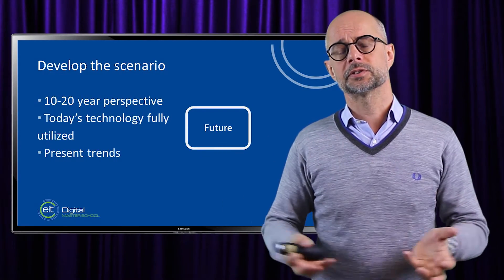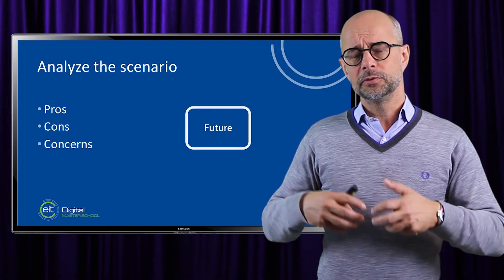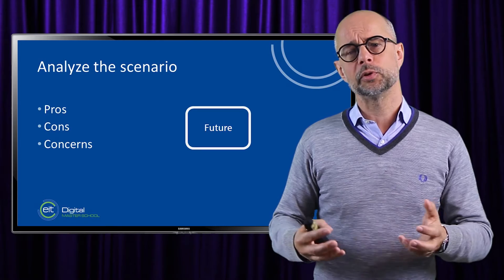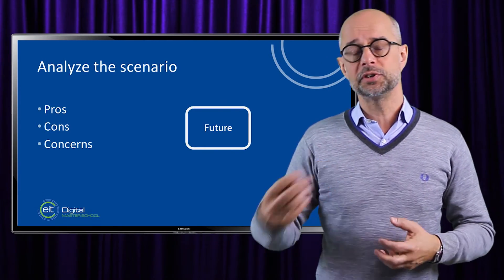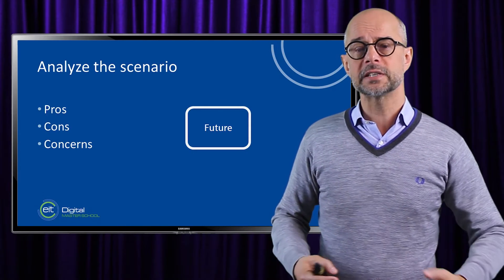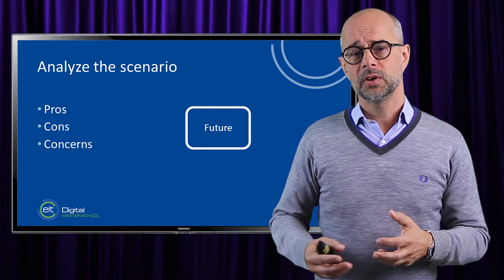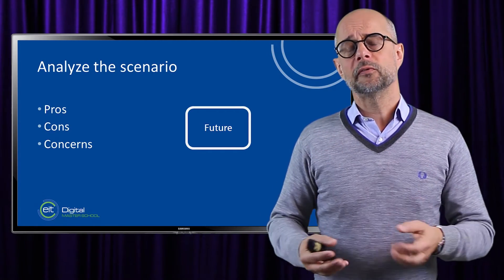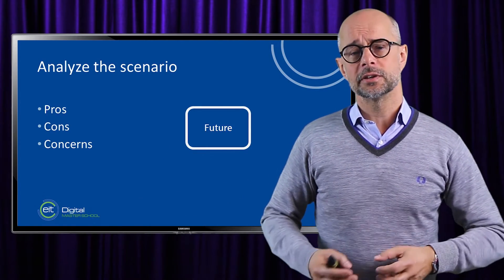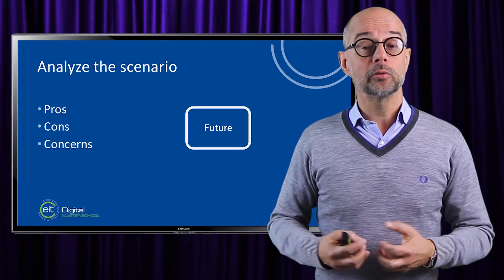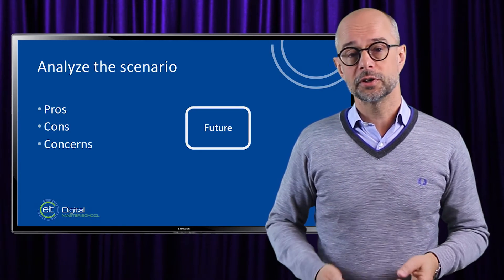Once we have this first draft of a scenario, we need to analyze it and get all involved to reflect upon that specific scenario. Those involved may be the management team, a research team, or an investment team — those who will later use this map to make decisions. We need to get everyone to reflect upon what may support or work against the scenario, and also collect other relevant comments or general concerns about this development.